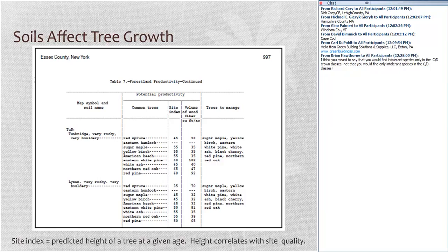This is the soil survey for Essex County, New York — page 997, so these surveys can be very long. All of this information is available online for almost all states. We can see the Tunbridge D soil type — Tunbridge, very rocky — and the D indicates a fairly reasonably steep slope. The survey shows the common trees that occur on that soil and what's called the site index.